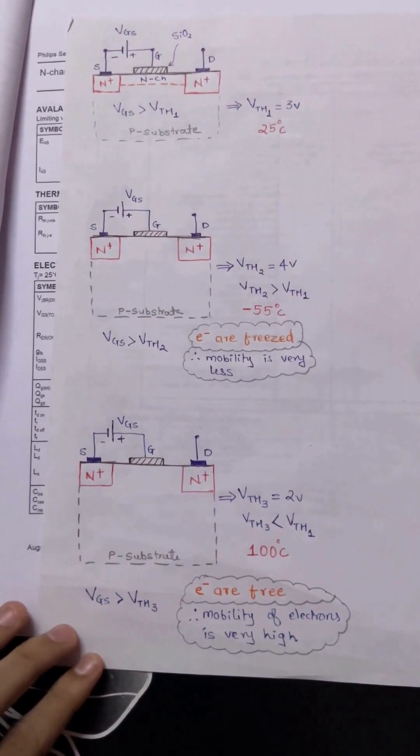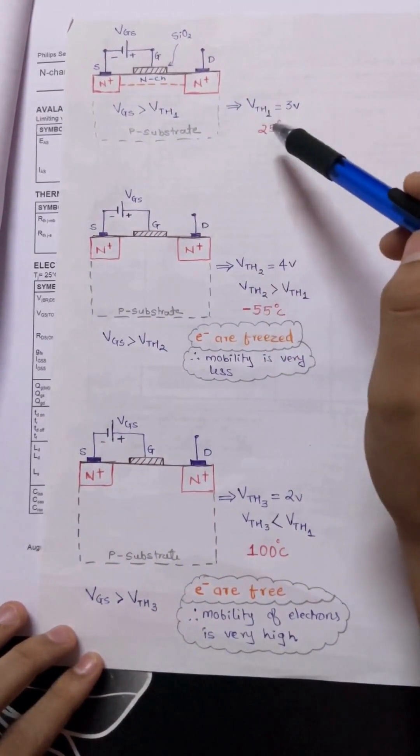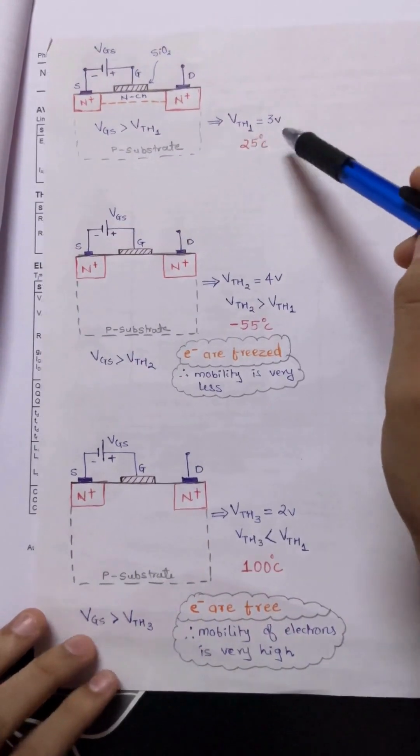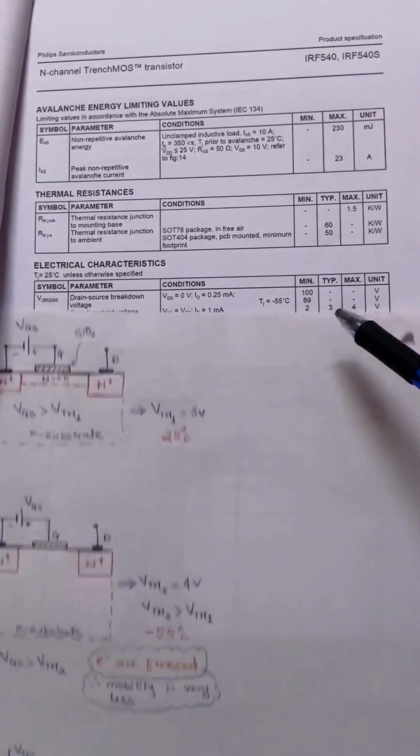Let's assume if I'm operating my n-channel MOSFET at around room temperature, that is around 25 degrees Celsius. As I mentioned, you always have to take the typical value which is around 3 volts.